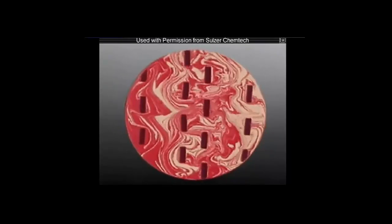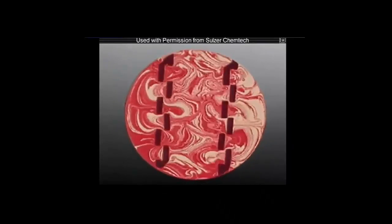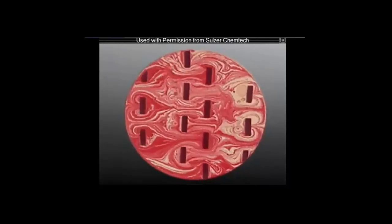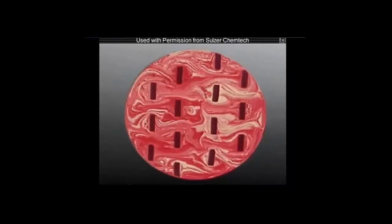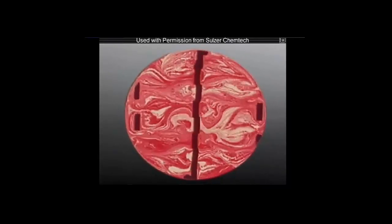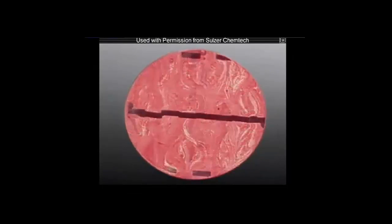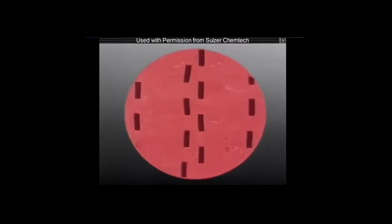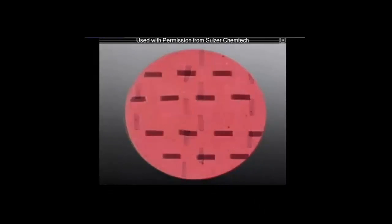Note the degree of homogeneity after the first and second mixing elements. The increasing homogeneity is shown by the cross-sectional cuts taken after 4, 5, 6, and 7 mixing elements. After 8 elements, the two high viscosity components look mixed to the naked eye — about a 90% degree of homogeneity. Higher degrees of homogeneity are easily achieved by adding a few more elements.